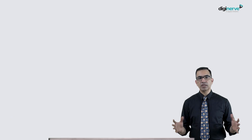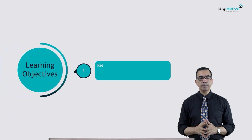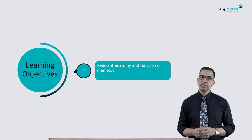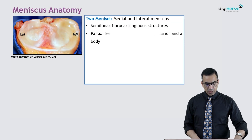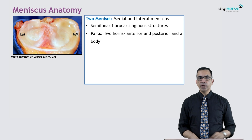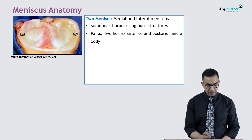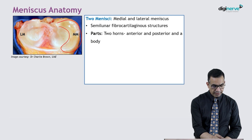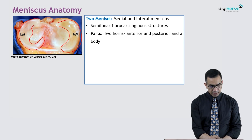In the initial part we will discuss the meniscus anatomy and its clinical implication, followed by meniscal injuries. As we know, in the knee joint there are two menisci — medial and lateral.